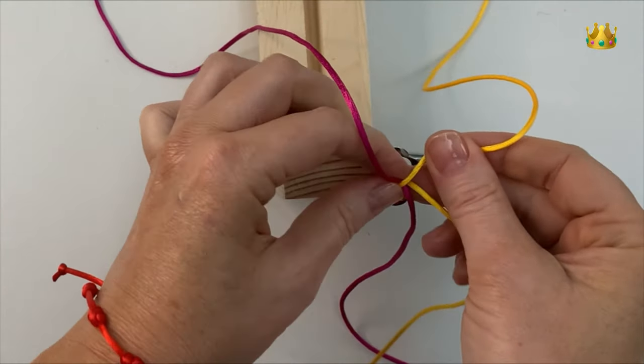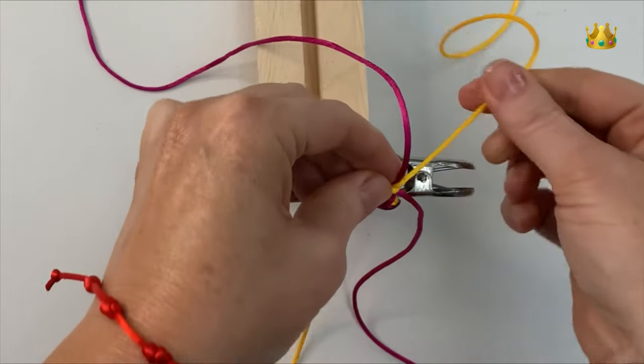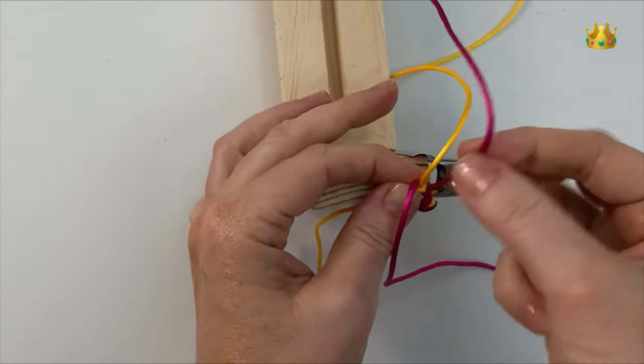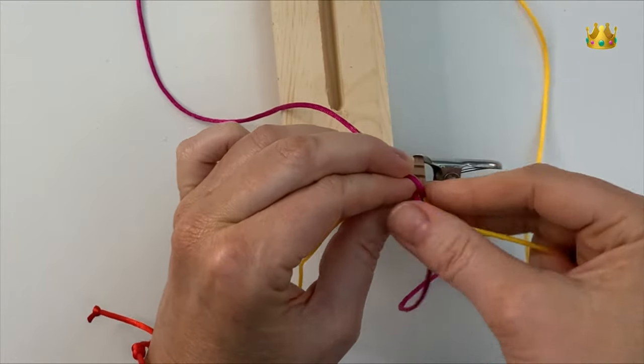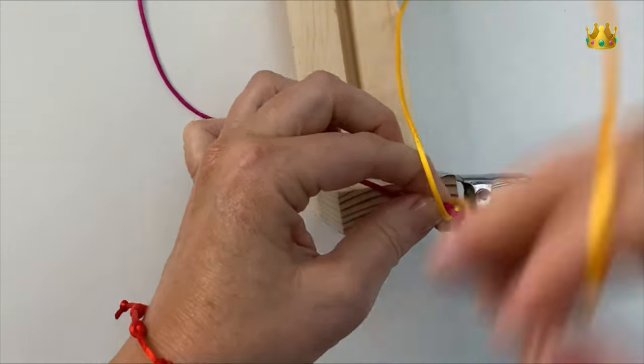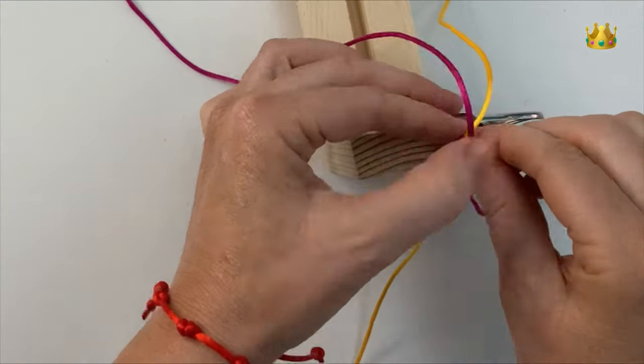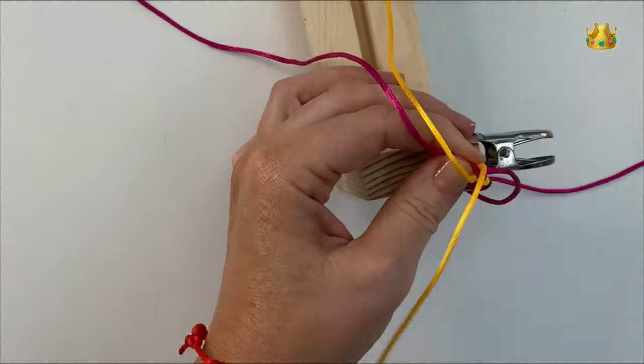Swapping the left and right threads and then swapping the top and bottom threads. Just continuing those same stitches until you get to your desired length of braid.